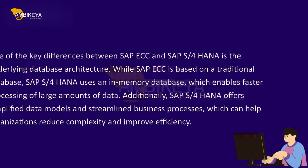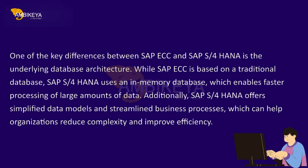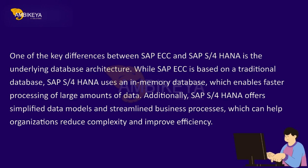One of the key differences between SAP ECC and SAP S/4HANA is the underlying database architecture. While SAP ECC is based on a traditional database, SAP S/4HANA uses an in-memory database, which enables faster processing of large amounts of data. Additionally, SAP S/4HANA offers simplified data models and streamlined business processes, which can help organizations reduce complexity and improve efficiency.